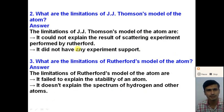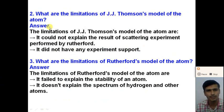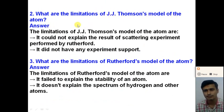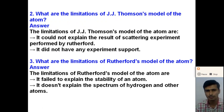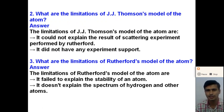Second question: What are the limitations of the J.J. Thomson model of an atom? According to the J.J. Thomson model of an atom, all the positive charges are distributed continuously over a sphere, like a pudding, and the electrons are embedded discretely in the sphere — like a plum pudding or watermelon model.